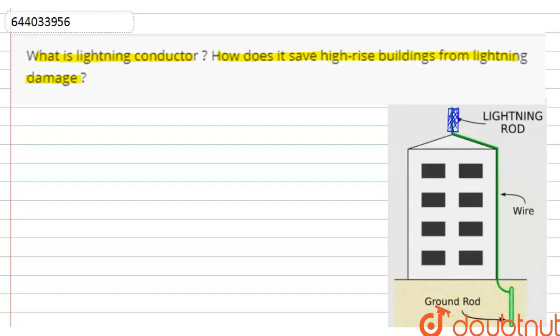So that if lightning occurs, this rod can take all the charge from the lightning and pass it through this wire into the ground, that is, earth.